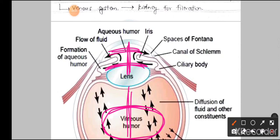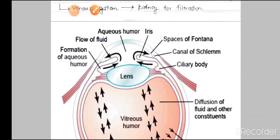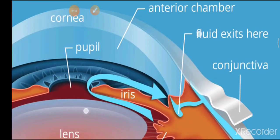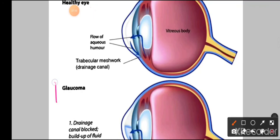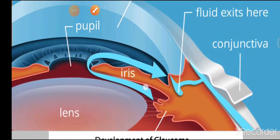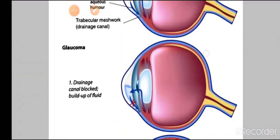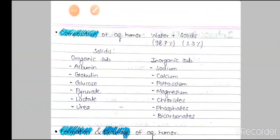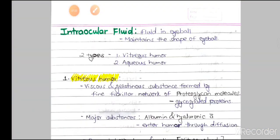The vitreous humor is present in the vitreous chamber, and in front of the lens is the aqueous humor. The vitreous humor comes from diffusion from the vascularized layer, while the aqueous humor is formed from the ciliary body via ciliary projections. If there is any fault in the drainage pathway, glaucoma can occur. That covers the intraocular fluid — in the next video we will look at intraocular pressure.